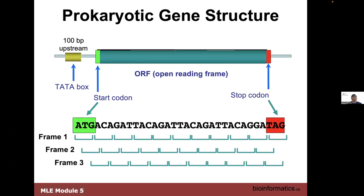A reminder about prokaryotic gene structure: most prokaryotic or bacterial genes are called open reading frames, or ORFs. They always have a start codon and a stop codon, both considered part of the gene. Genes in prokaryotes are not broken into exons like in eukaryotes, which makes gene finding somewhat easier. The frame is usually defined by the start codon, though genes within genes do occur in bacteria, albeit rarely.